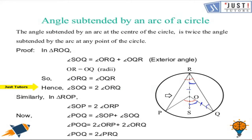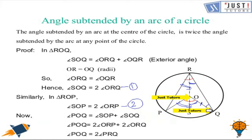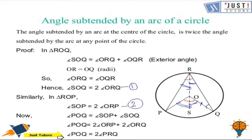Similarly, in triangle ORP, angle SOP is twice of angle ORP. Now adding both equations — call them equation 1 and equation 2 — we get that angle POQ equals angle SOP plus angle SOQ. Since SOP equals twice of angle ORP and SOQ equals twice of angle ORQ, we get that angle POQ equals twice of angle PRQ. Hence we have proved that the angle subtended by an arc at the center of a circle is twice the angle subtended by the arc at any point of the circle.